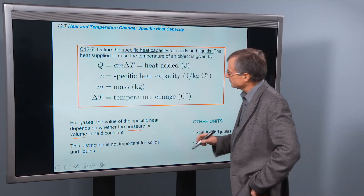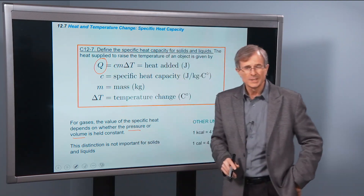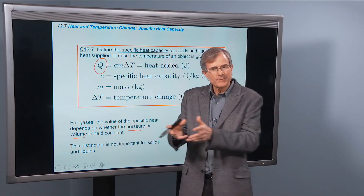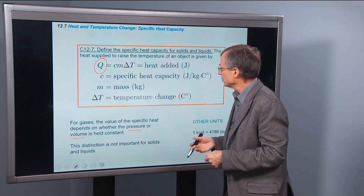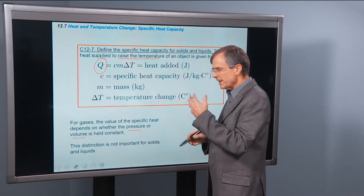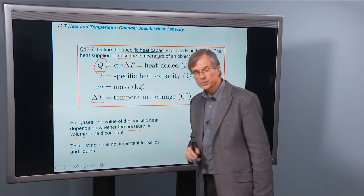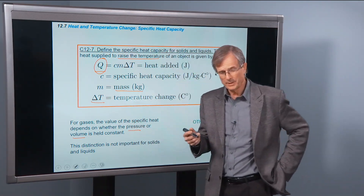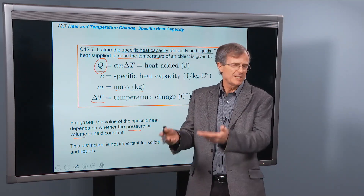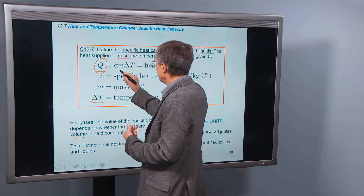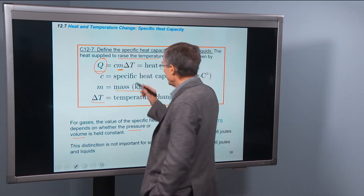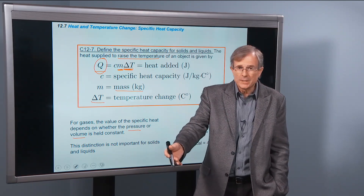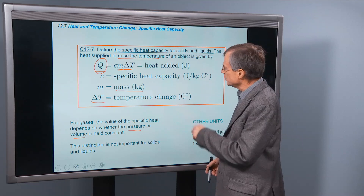So Q we're going to use to denote the heat added, measured in joules — it's really an amount of energy added to an object in order to raise its temperature. This is a relationship between the amount of heat added and the temperature change of the object. The bigger the object, the more mass it has, the more heat you would need to add to raise the temperature. And the greater the amount you want to raise the temperature by, the greater the heat you'll need to add.